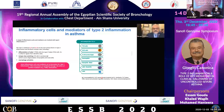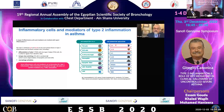The inflammatory cells involved in type 2 inflammation in asthma include TH2 cells and ILC2 cells, B cells producing IgE, eosinophils, basophils, mast cells — in other words the effector cells — and dendritic cells. The inflammatory mediators include IL-4, IL-13, IL-5, and the so-called alarmins. We will see in more detail how they play a role in type 2 inflammation.